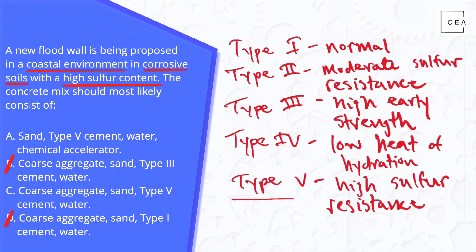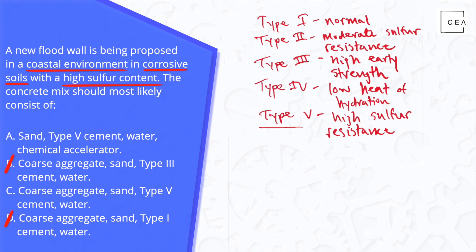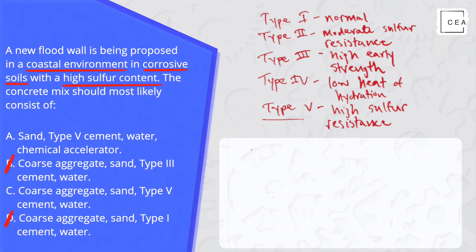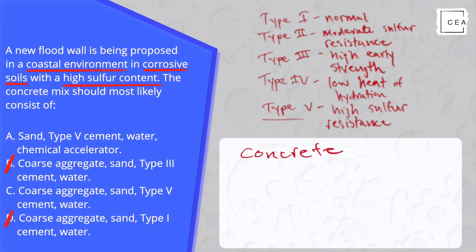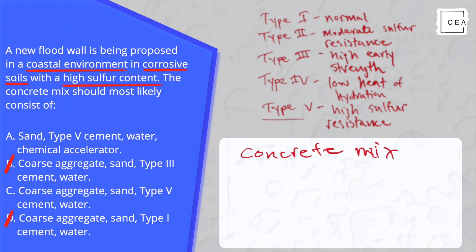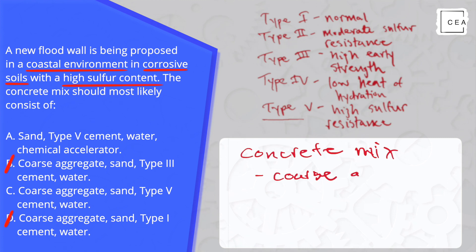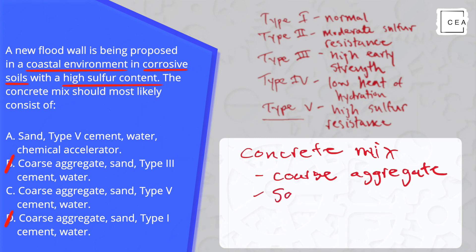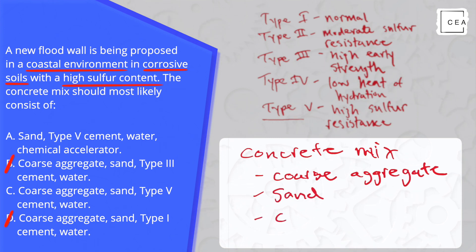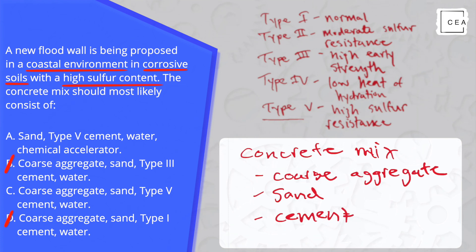This brings us to the point where we need to review the concrete mix ingredients. A concrete mix will consist of coarse aggregate — for example, gravel — sand, which you may also hear called fine aggregate, cement — which will be one of the five types we just discussed — and finally water.